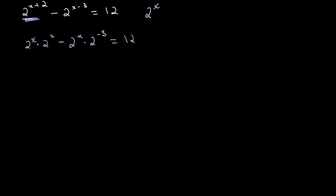From here we can simplify this. We get 4 times 2 to the x minus 1 over 8 times 2 to the x is equal to 12. And 4 minus 1 over 8 is 32 over 8 minus 1 over 8 which is 31 over 8. So we have 31 over 8 multiplied by 2 to the power of x is equal to 12.